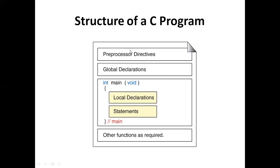Now we will look at the structure of a C program. The structure is divided into four parts: first, the preprocessor directives; second, global declarations; third, the main method; and fourth, other functions as required. Some of these partitions are optional, but some preprocessor directives are mandatory.